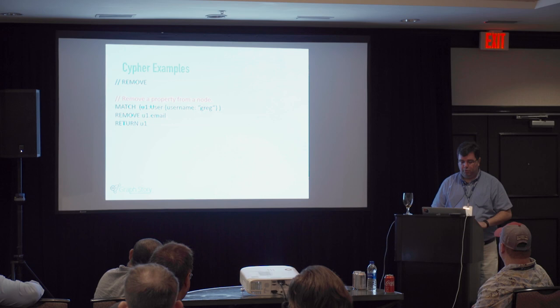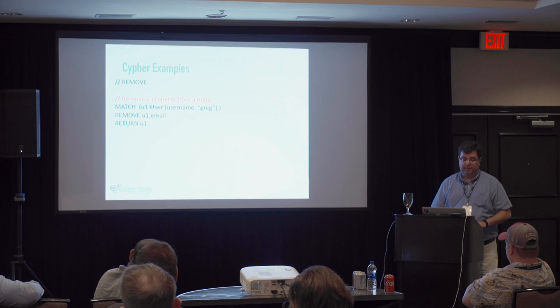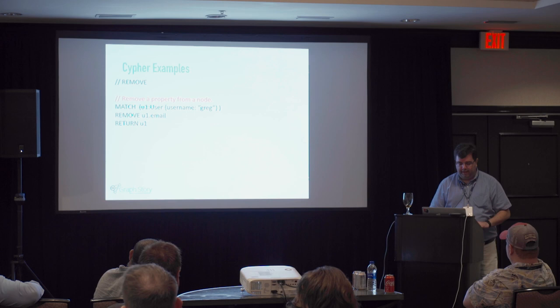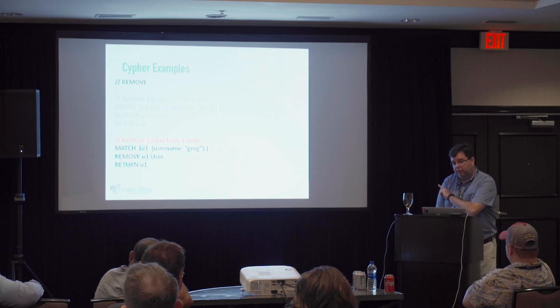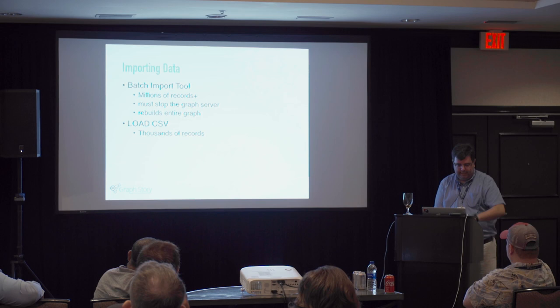Here's how you remove a particular property — we're going to remove email for Greg. And here's how you remove a label: go get this node and say on U1, remove the label 'user.' Just for Greg — he's not a user anymore.